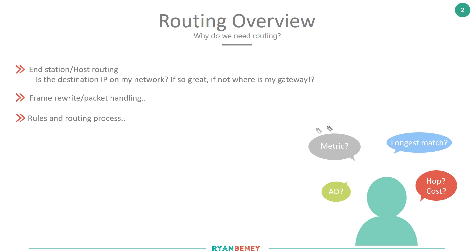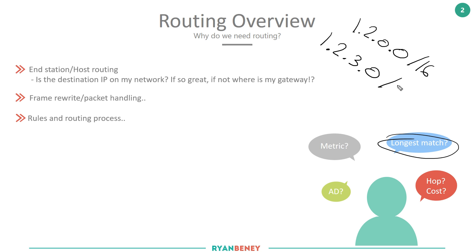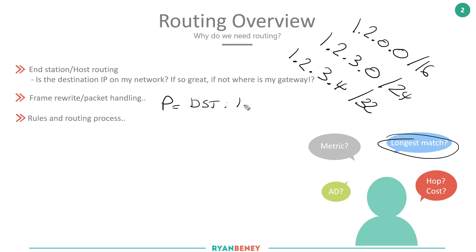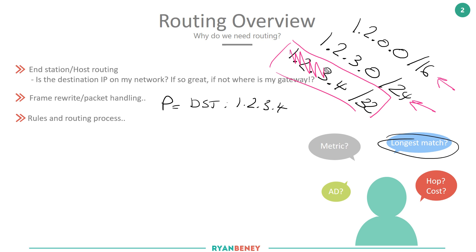We need to understand things like the longest match. If in my routing table I have 1.2.0.0/16, 1.2.3.0/24, and 1.2.3.4/32, and I receive a packet with the destination of 1.2.3.4 — do I know and understand why the /32 will be preferred over the /24 or the /16? And do I know that if recursion were to fail on the /32, the /24 will be the second preferred route? And if I have multiple routes to the same destination, do I understand how AD plays a part in that?